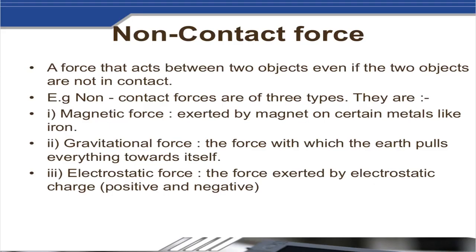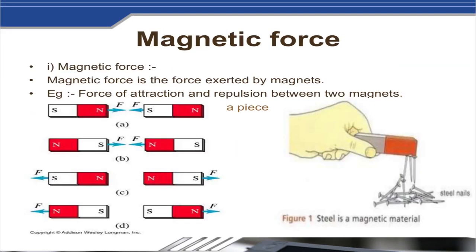Magnetic force is exerted by a magnet on certain metals like iron. Gravitational force is the force with which the earth pulls everything towards itself. Electrostatic force is the force exerted by an electrostatic charge, whether negative or positive. We will now see these with examples and experiments in detail.